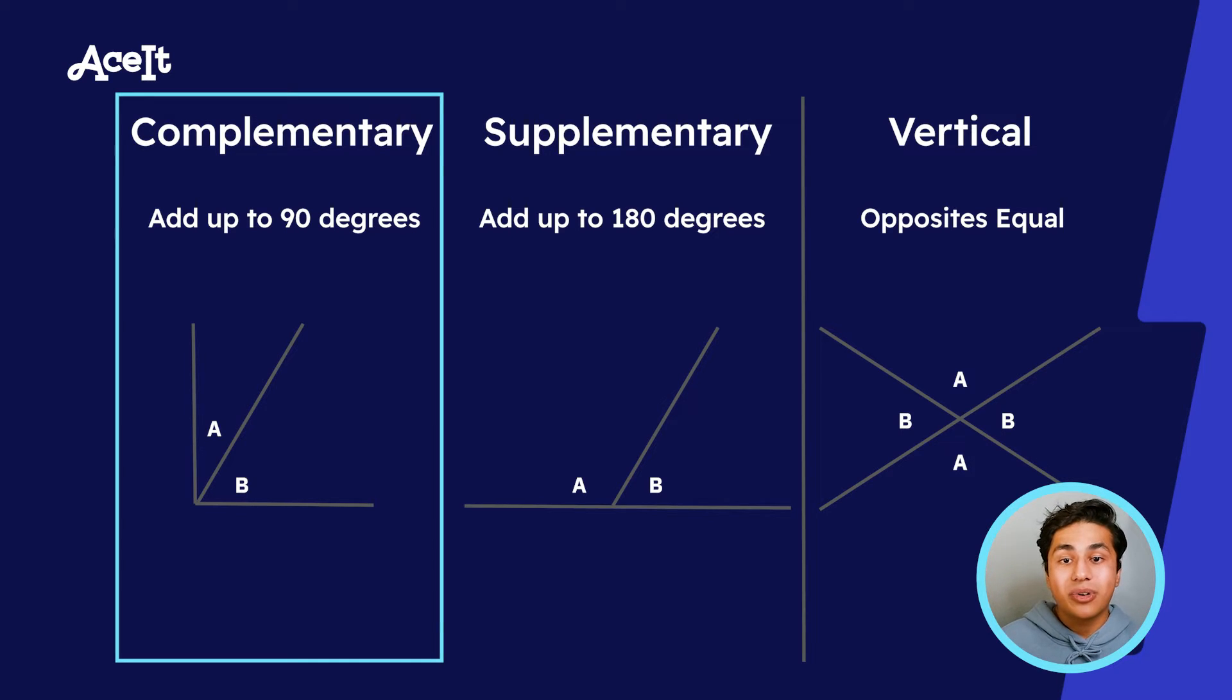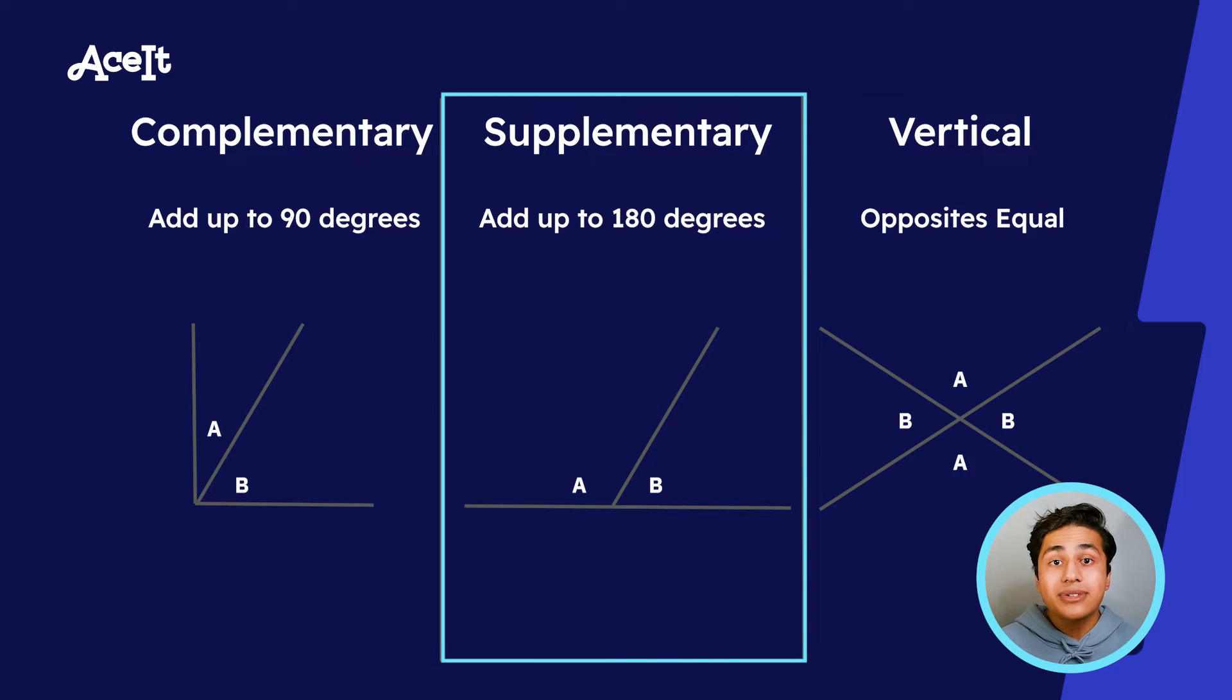A complementary angle formation occurs when the sum of two angles is 90 degrees. Whenever you see a flat line and the sum of the two angles is 180 degrees, they are considered supplementary angles.